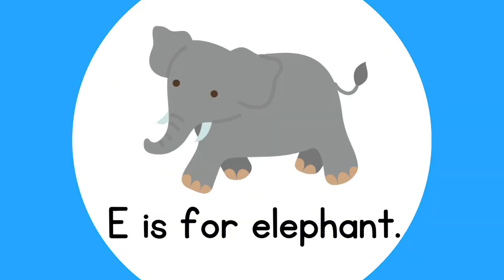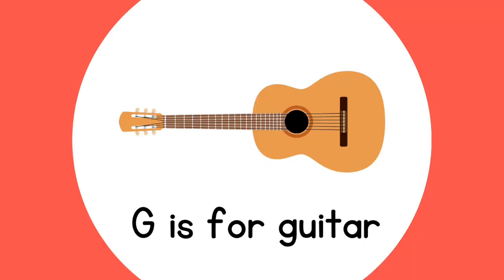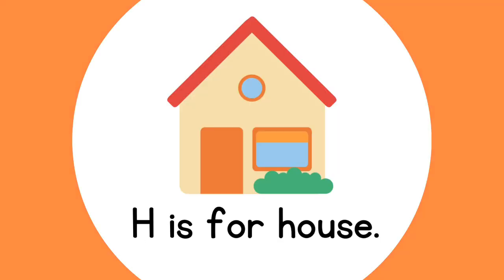E is for Elephant. F is for Finn. G is for Guitar. H is for House.